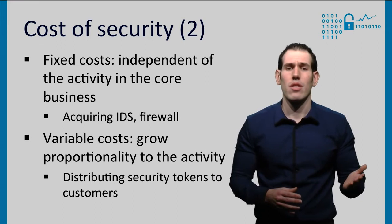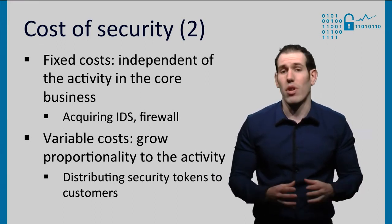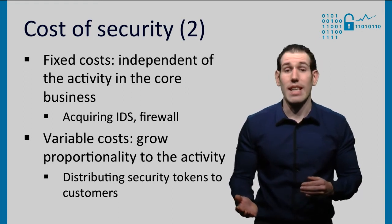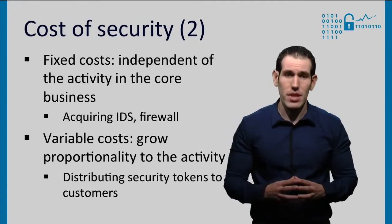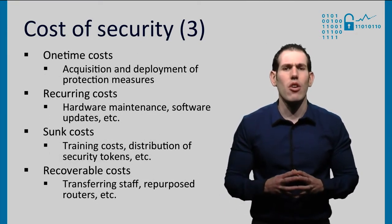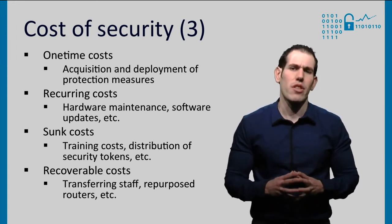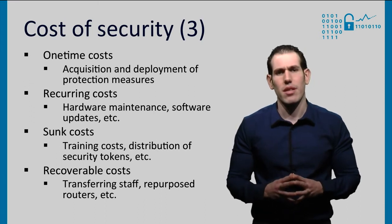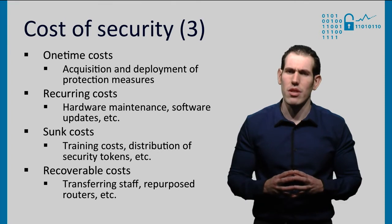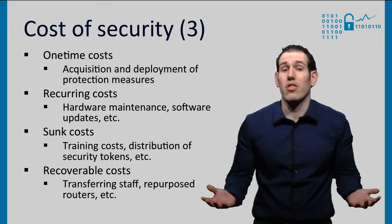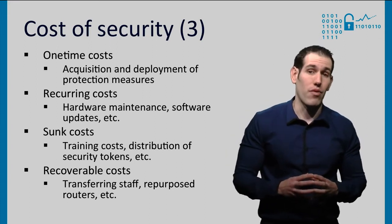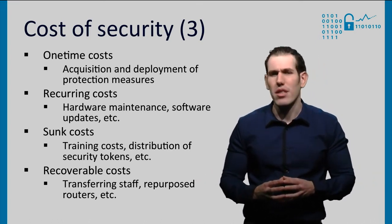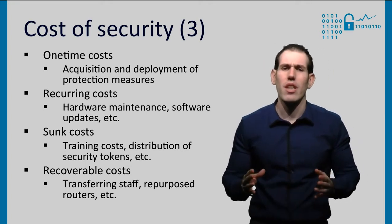On one hand, we have fixed costs, which are independent of the core business activity — for instance, acquiring new software. On the other hand, we have variable costs, which grow proportionally to the activity, like the cost of distributing security tokens to customers. We can further divide the costs depending on their periodicity. While the acquisition and deployment of protection measures is typically a one-time cost, their maintenance and indirect costs are often recurring. In certain situations, it is useful to consider sunk costs, which cannot be recovered when decommissioning protection measures. Most security equipment, like firewalls, can be sold or repurposed, for example as routers, and staff can always be transferred. But expenses for training or the distribution of security tokens to customers are irreversibly spent.